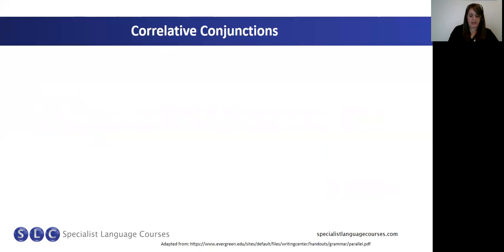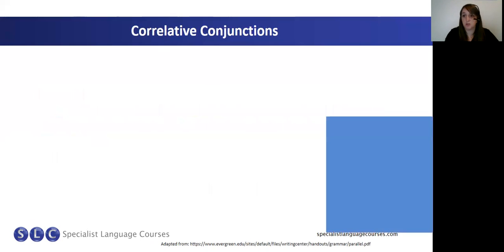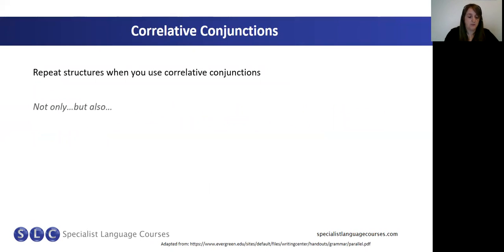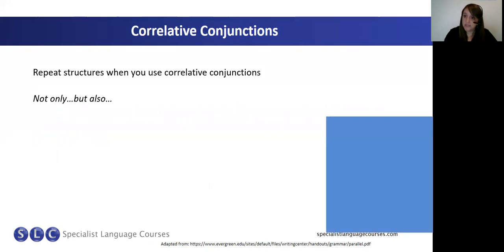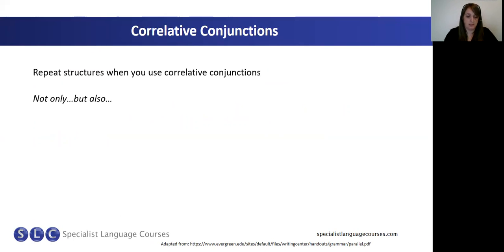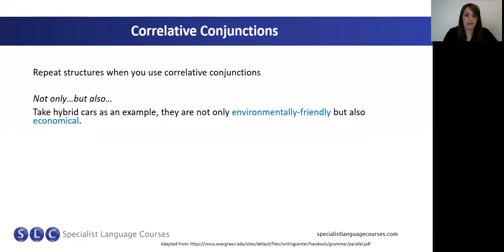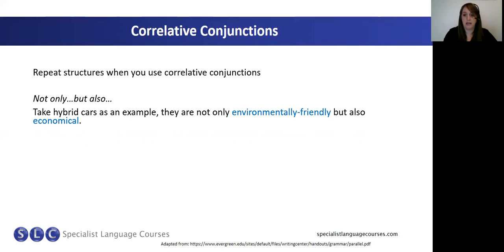The next thing we're going to look at is how to use parallel structures with correlative conjunctions. These conjunctions and structures should be familiar to you already. The first example is 'not only... but also'. In essay writing or speaking, we use 'not only but also' to give support and ideas. For example, take hybrid cars: they are not only environmentally friendly but also economical. We have two adjectives, environmentally friendly and economical, following a parallel pattern.